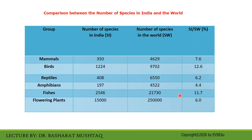This is the comparison between the number of species of India and the world. The various groups include mammals, birds, reptiles, amphibians, fishes, and flowering plants. These columns show the species counts of respective groups present in India and in the world, along with India's percentage share of world species.